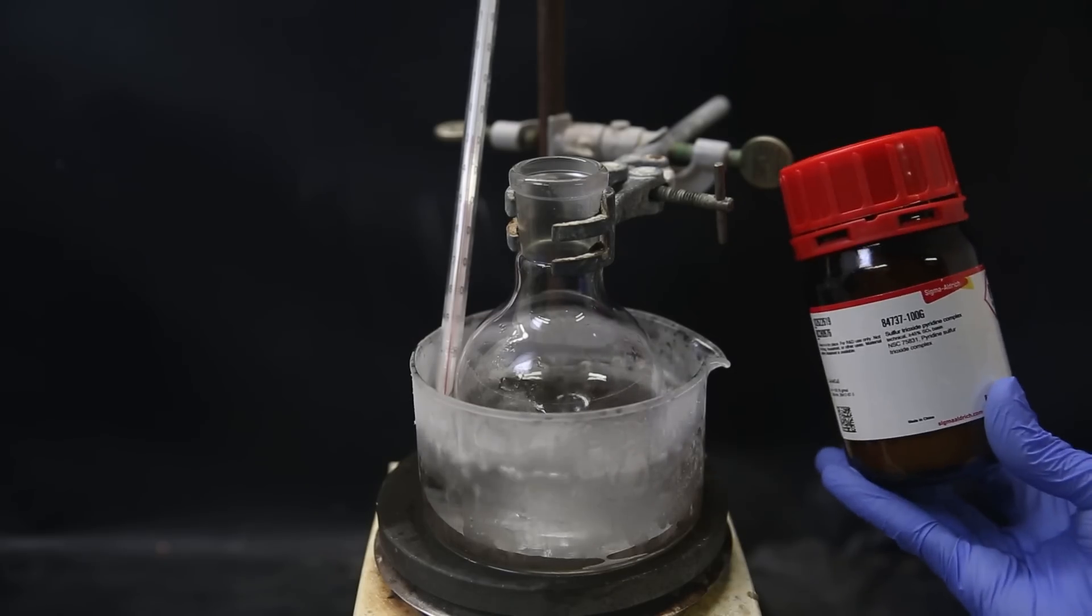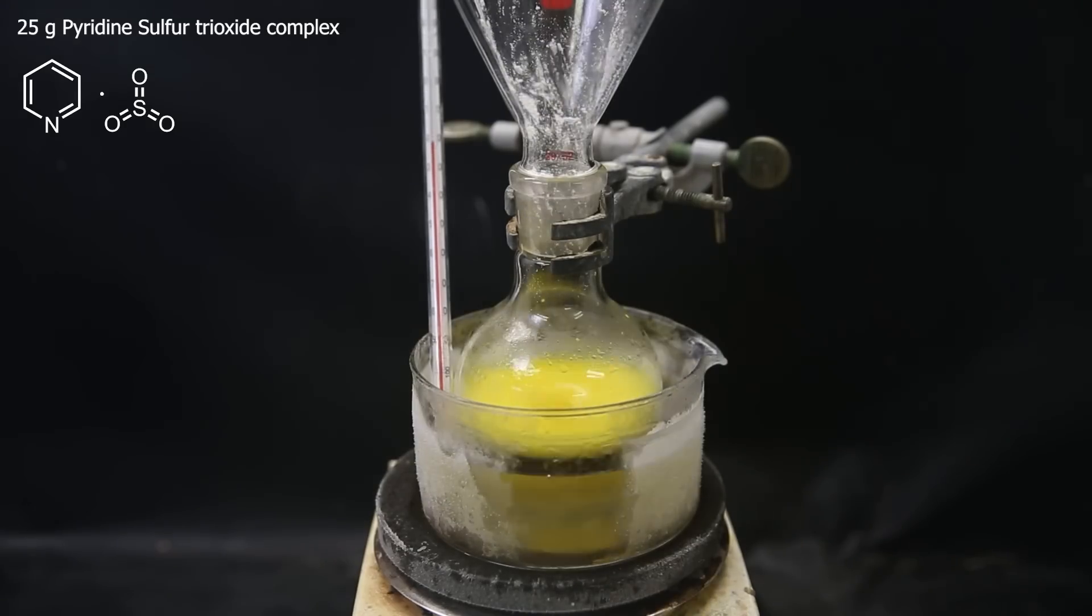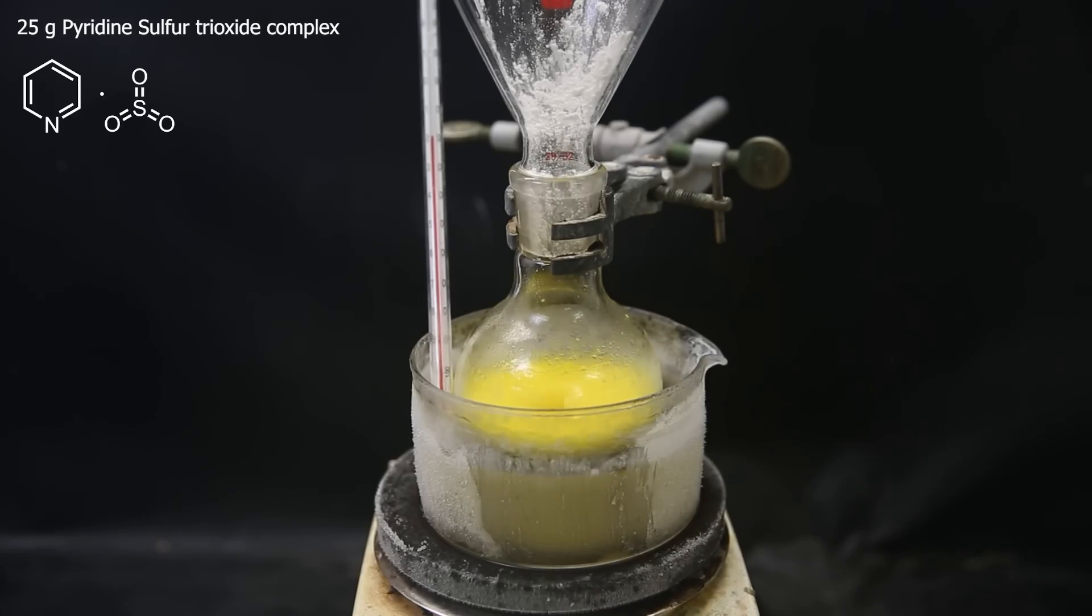Now the starting material is the pyridine-SO3 complex. Of that, I add 25 grams to the potassium hydroxide solution in about 5 portions, spaced over 25 minutes.